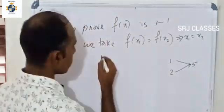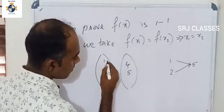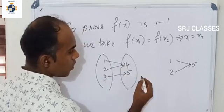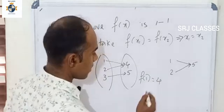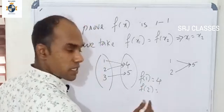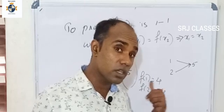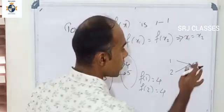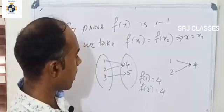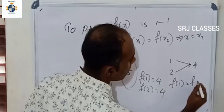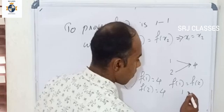Let's take a look. f(1) maps to 4 — one image is 4. f(2) also maps to 4. So 1 image is 4 and 2 image is 4. Then f(1) = f(2), meaning f(x1) = f(x2), but 1 ≠ 2, so x1 ≠ x2.